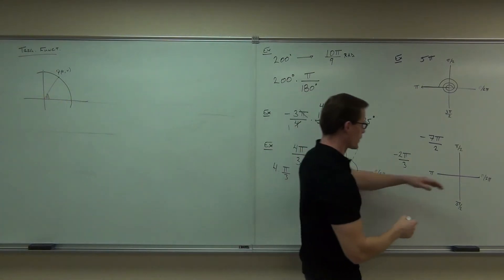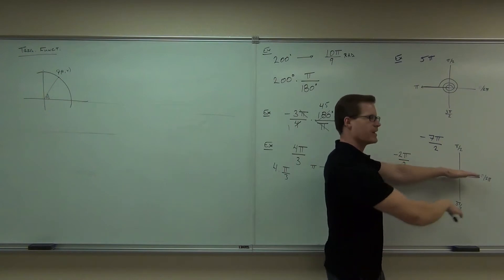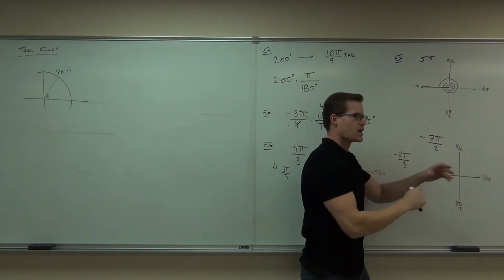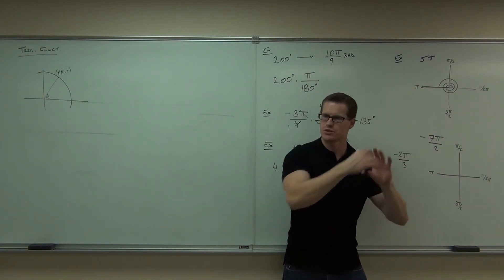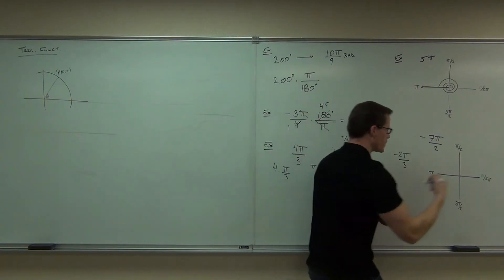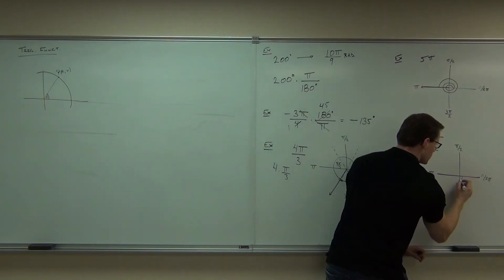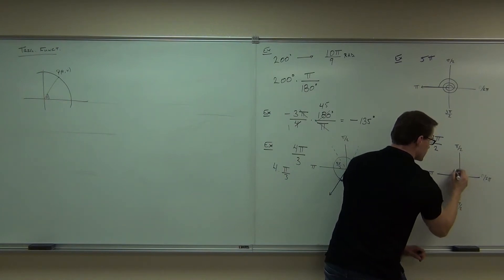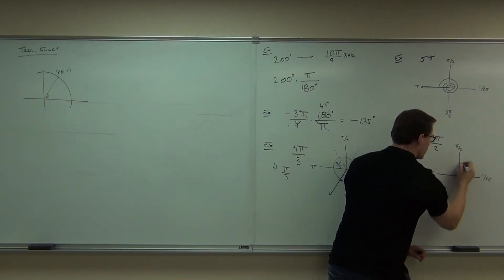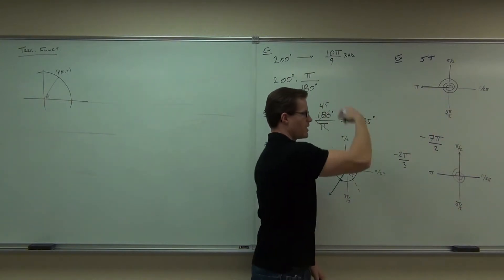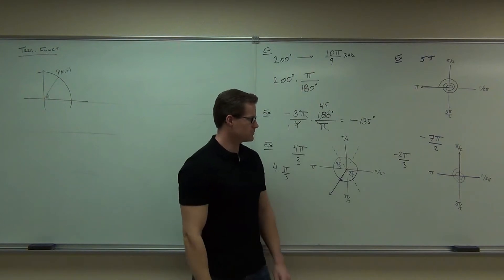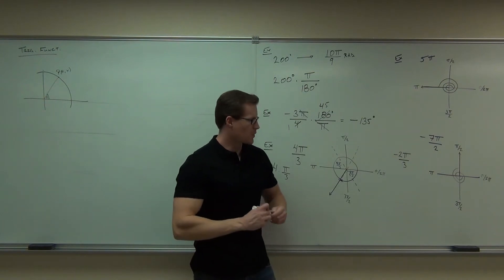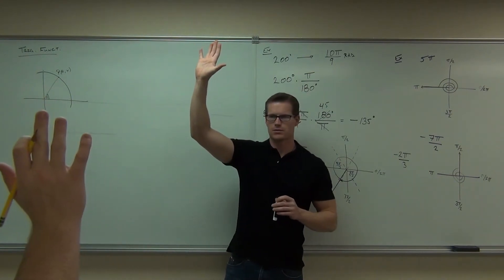Let's see where we end up. We'll start at our initial side. Negative — I know that means we're going clockwise. I'm going to count 7 π/2's going clockwise. That's what our negative says. So here's 1, 2, 3, 4, 5, 6, 7. I know that as our terminal side — we've gone around one time and a quarter, and we're at one and three quarters.